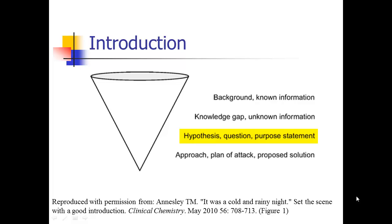You want to have a clear statement towards the end of the introduction that says 'we hypothesized that,' 'we wanted to answer the question of,' or 'we aimed to.' It's good to use that explicit language because sometimes readers will just skim the introduction looking for that statement of what the purpose of your study was. Then you tell them a little bit about your experimental approach — how your experiment is different and new, and how it fills in the gaps and limitations of all those previous studies.